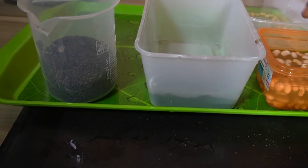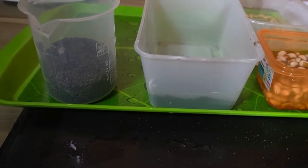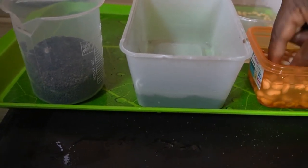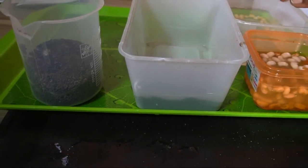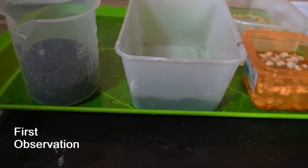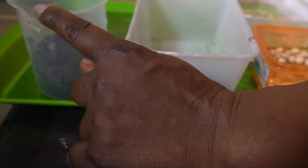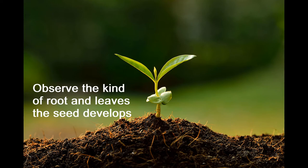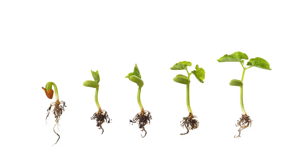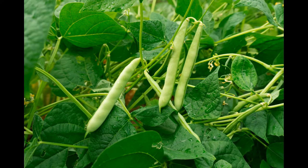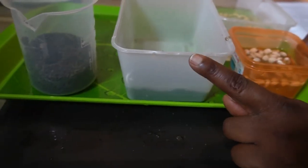After they sprouted, after germination, they will start growing. I want you to carry out an observation. You look at the plant — the kind of plant that will come out or grow out of the Dicotyledon seed. Study the plant, look at the kind of root it has and look at the kind of leaves it has. Then you do the same thing with the Monocotyledon seed.